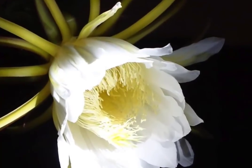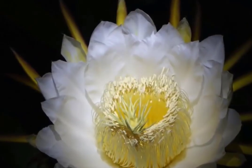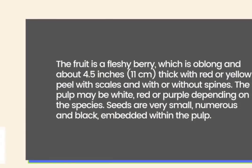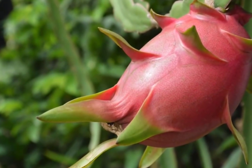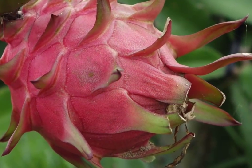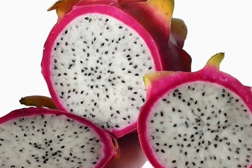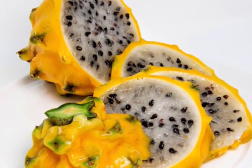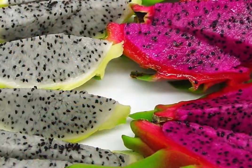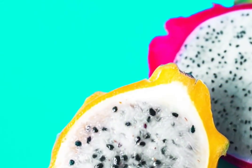The stamens and stigmas are cream-colored. The fruit is a fleshy berry, oblong and about 4.5 inches thick, with red or yellow peel, with scales and with or without spines. The pulp might be white, red or purple depending on the species. Seeds are very small, numerous and black, embedded within the pulp.